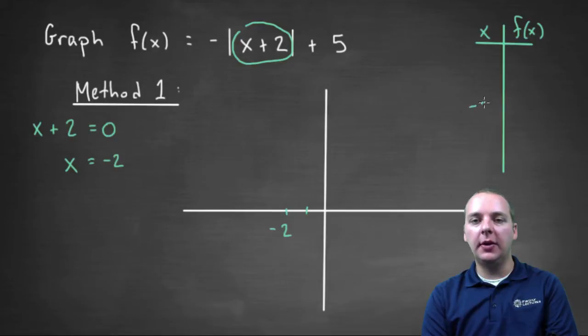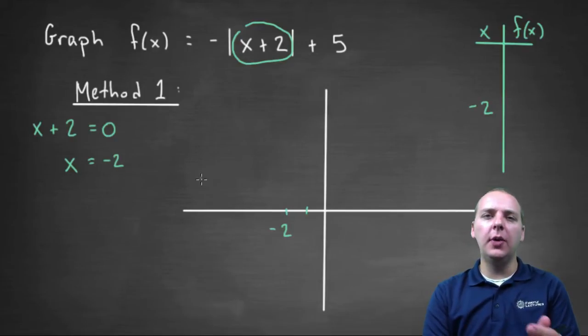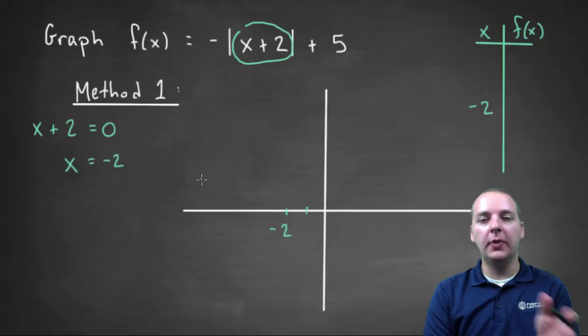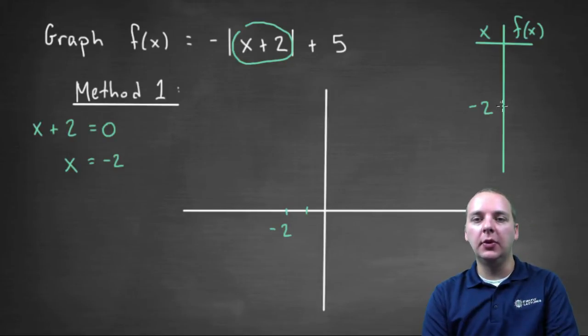In the middle of our table should be negative two. And then we'll pick a few x values before negative two, and a few values after negative two. So maybe negative three and negative four, and negative one and zero after negative two.